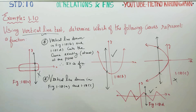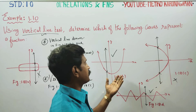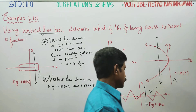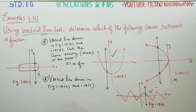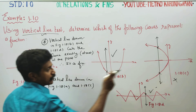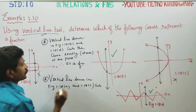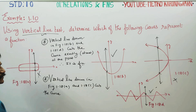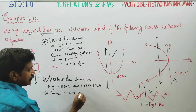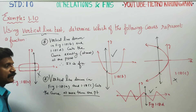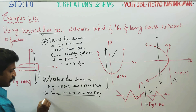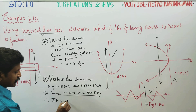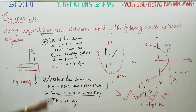For figure 1.18c, a vertical line drawn to the graph cuts the curve. A vertical line drawn in figures 1.18a and 1.18c cuts the curve at more than one point. Therefore, it is not a function.